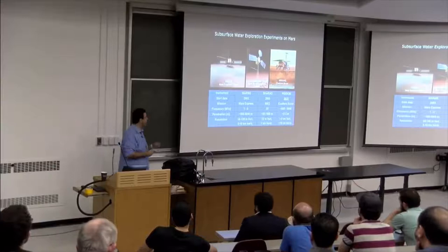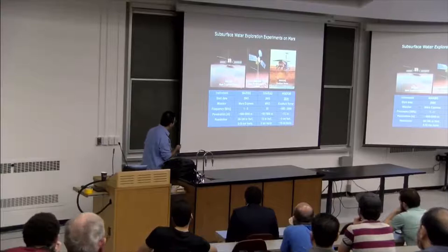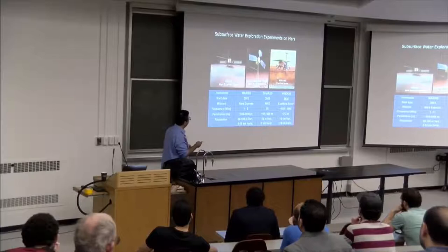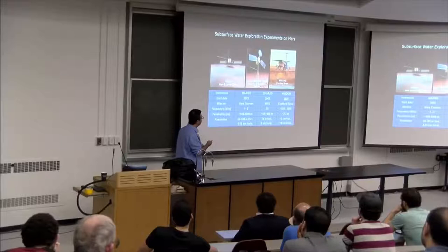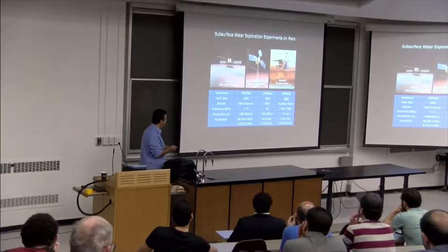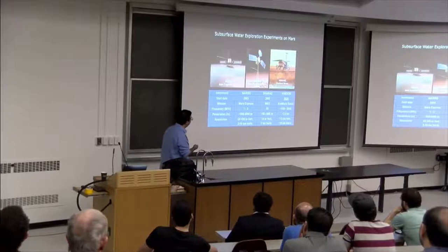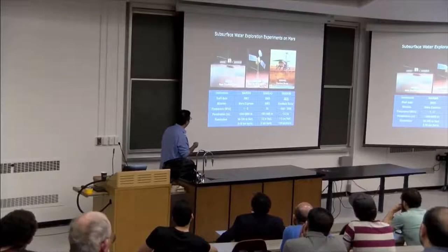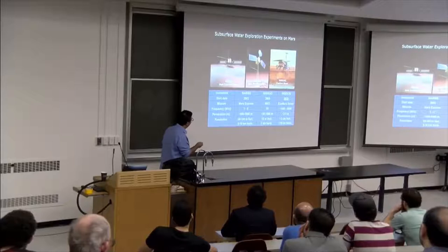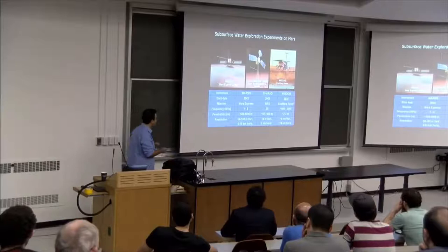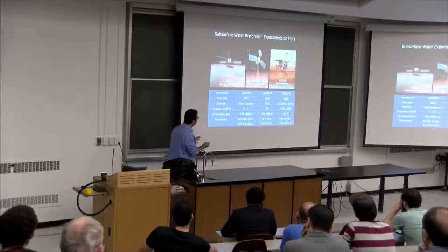The first instrument is MARSIS, on board the Mars Express Orbiter. The second is the SHARAD instrument, on board the Mars Reconnaissance Orbiter. The third is the WISDOM radar, on board the ExoMars Rover, to be launched to Mars in 2020. The key difference between these three instruments is their operating frequencies, which determine penetration depth and vertical resolution. MARSIS uses 1 to 5 MHz with penetration from 500 to 5,000 meters. SHARAD looks at the shallow subsurface from 50 to 1,000 meters. WISDOM looks for ice and water in the first few meters. Two are currently active on Mars, and one is on its way in 2020.